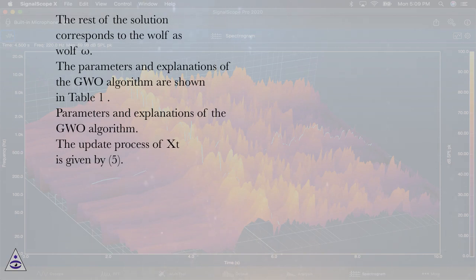The parameters and explanations of the GWO algorithm are shown in Table 1: Parameters and explanations of the GWO algorithm. The update process of Xt is given by equation (5).